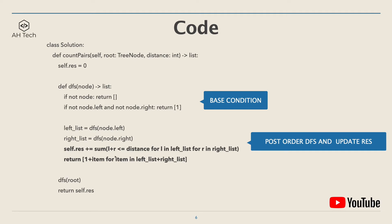Finally, we return all elements from the left list and right list, incrementing each distance by one since we are going one level up, and return this combined list to the parent node. The top-level call runs the recursion function and returns self.res as the output.